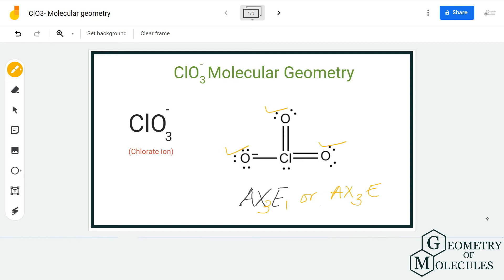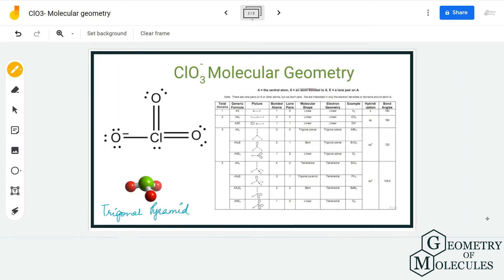E is the number of lone pairs, and chlorine atom has one lone pair. Once you get this notation, you can use this notation and this table to find the corresponding molecular geometry. If you zoom in, you can see that AX3E1 corresponds to trigonal pyramidal molecular geometry.